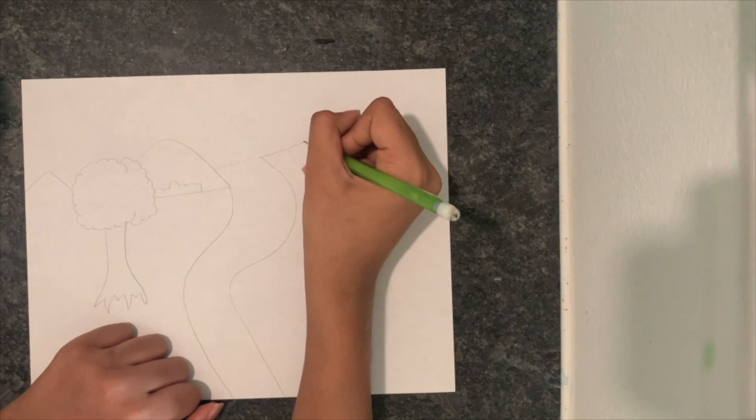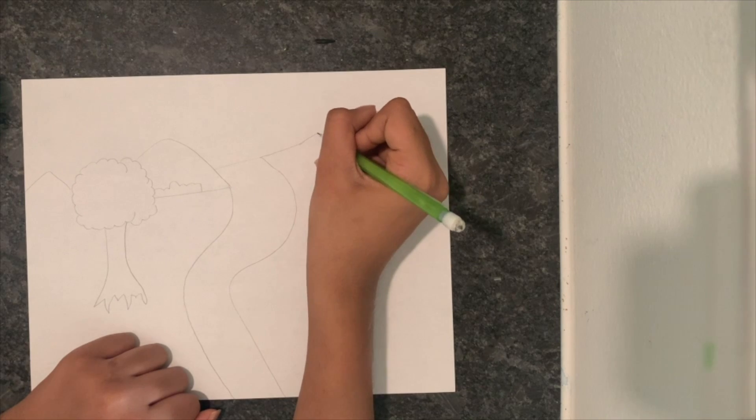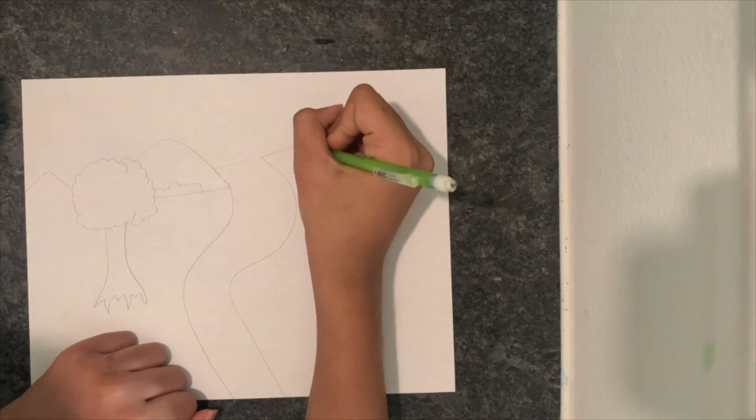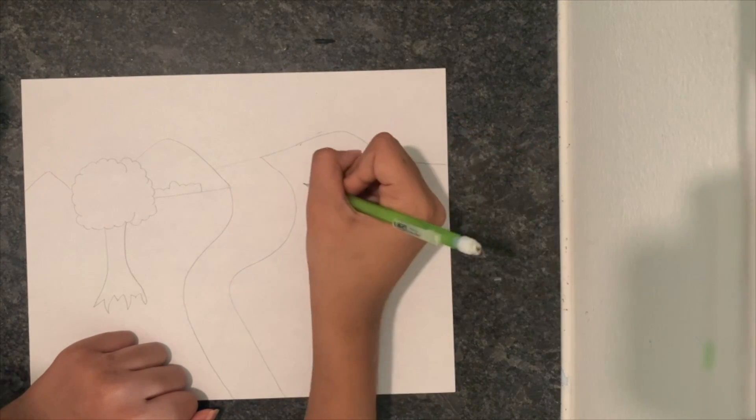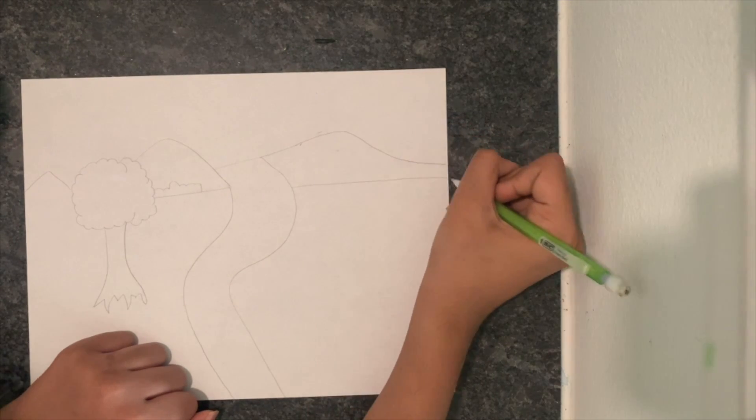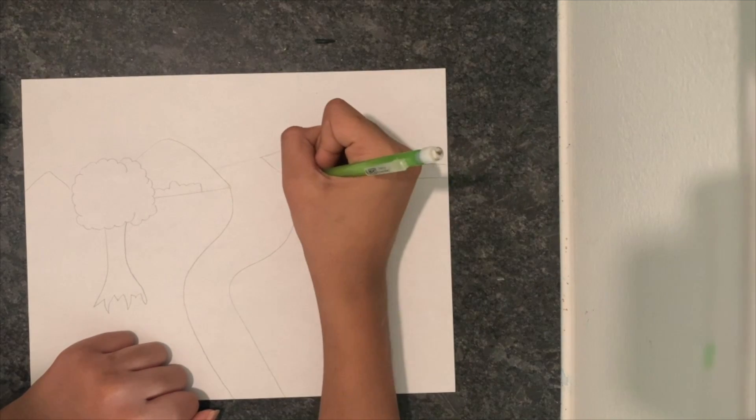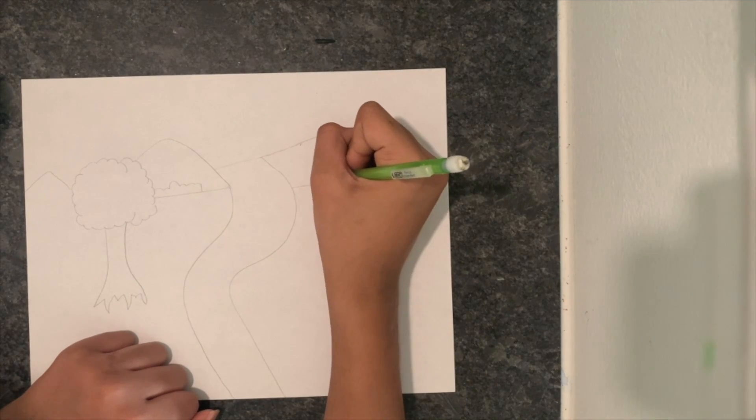Next, with that slanted line I just connected it to make another mountain. Once again, make sure that the bottom line of your triangles for your mountains connect with each one of your other triangles.